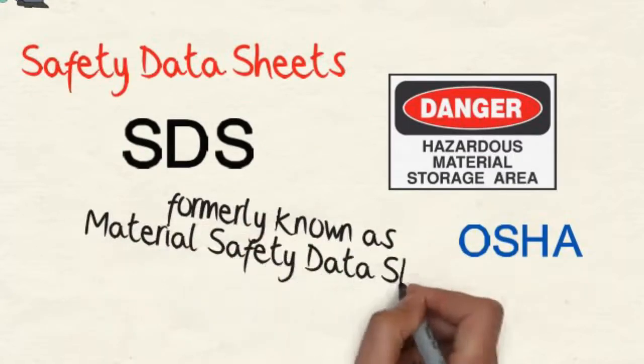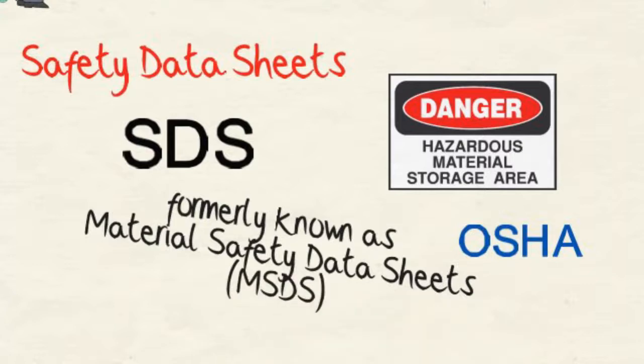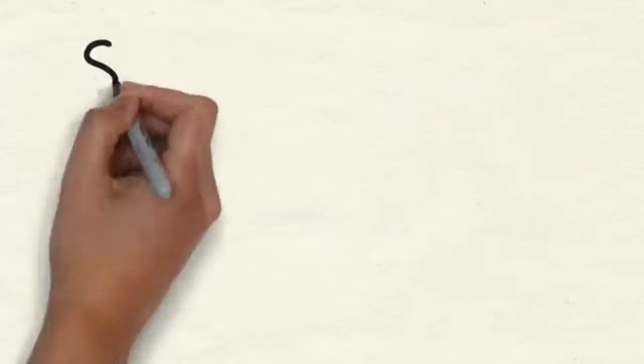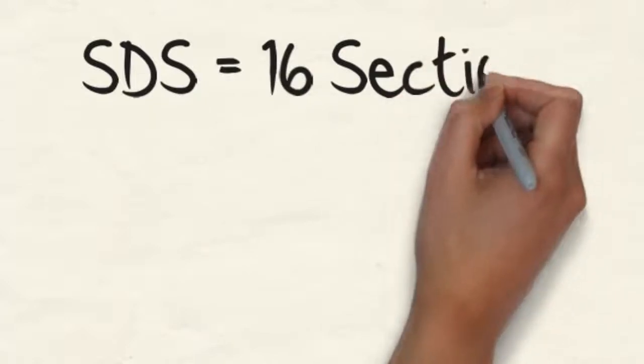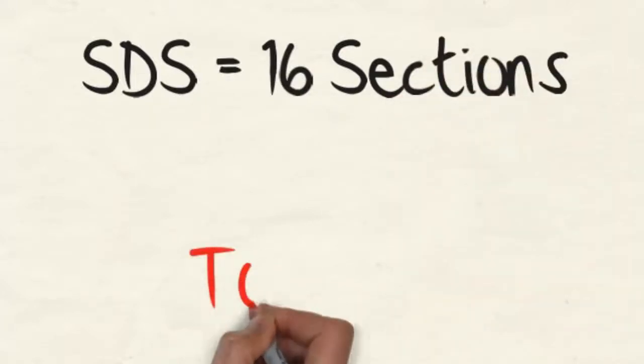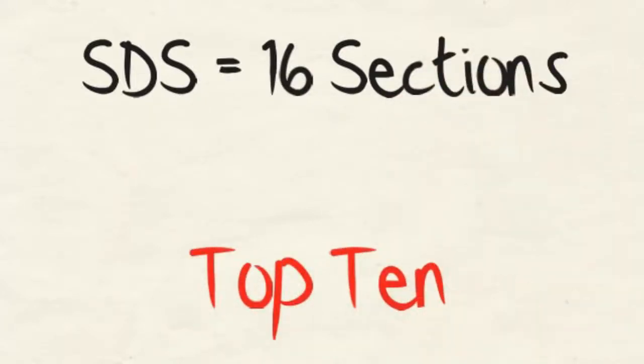OSHA's hazard communication standard requires chemical manufacturers, distributors, or importers to provide safety data sheets, formerly known as material safety data sheets or MSDSs, to communicate the hazards of chemical products. All safety data sheets are required to follow a specific format and provide detailed information in 16 different sections.